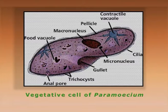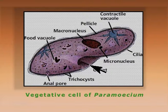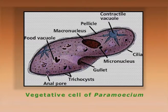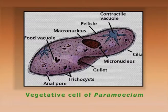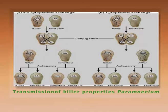Paramecium is a unicellular, slipper-shaped organism with cilia all around the cell and a unique gullet through which it takes in food. Being unicellular, all cellular mechanisms occur within the cell. It has a contractile vacuole for osmoregulation, allowing survival in hypertonic or hypotonic conditions. Normally harmless and free-living, paramecium may contain extra-nuclear genes in the form of kappa particles, which can cause production of a protein called paramecin. These kappa particles are present in the cytoplasm and denoted by capital K.